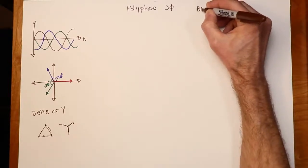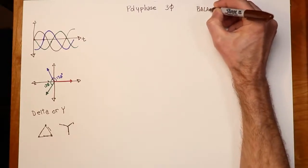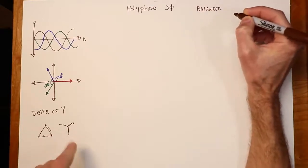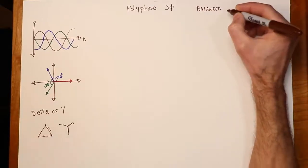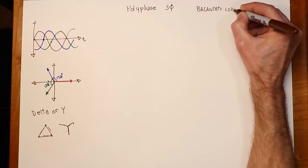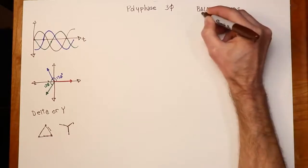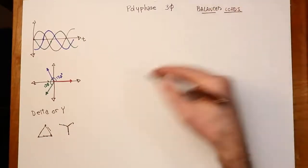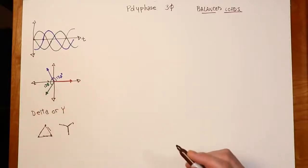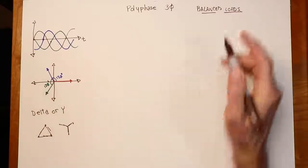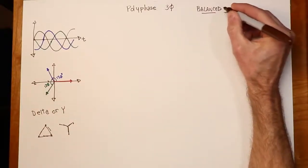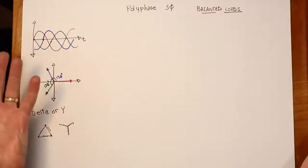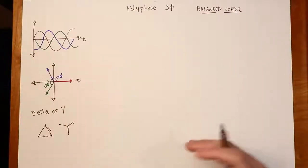A balanced load just means that the three legs of the load are identical. One of the nice things about a balanced load from an analytical standpoint is that you really only have to analyze one of the three legs, and then the total is just three times that, because you have three identical legs.